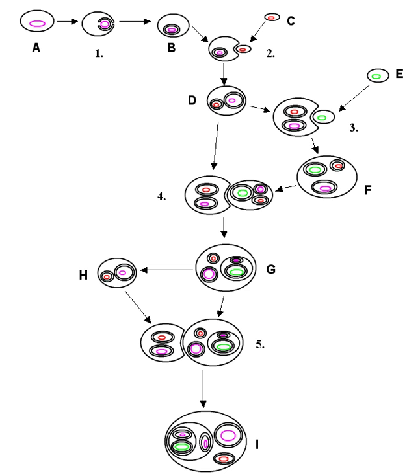There are two types of symbiont transmissions. Horizontal transmission, where each new generation acquires free-living symbionts from the environment, such as the nitrogen-fixing bacteria in certain plant roots.